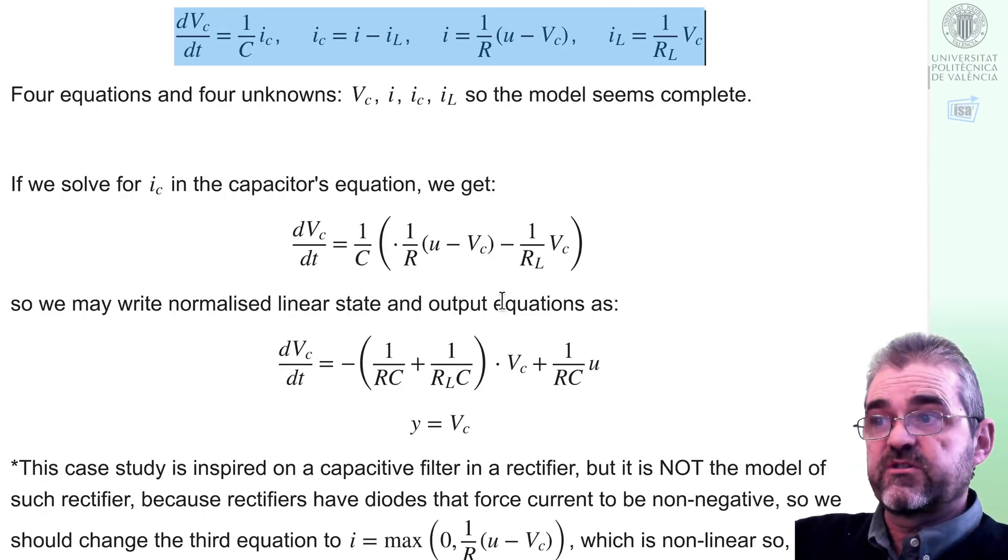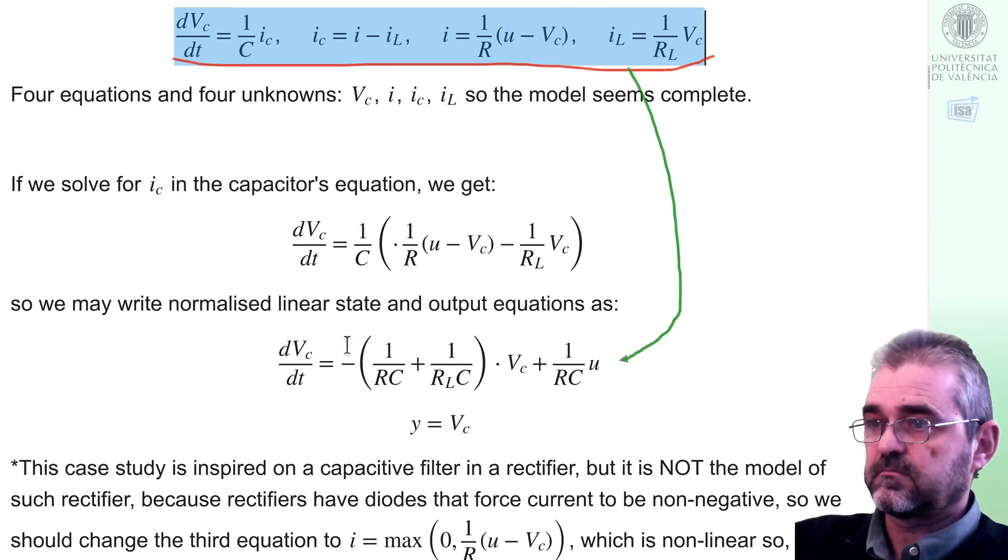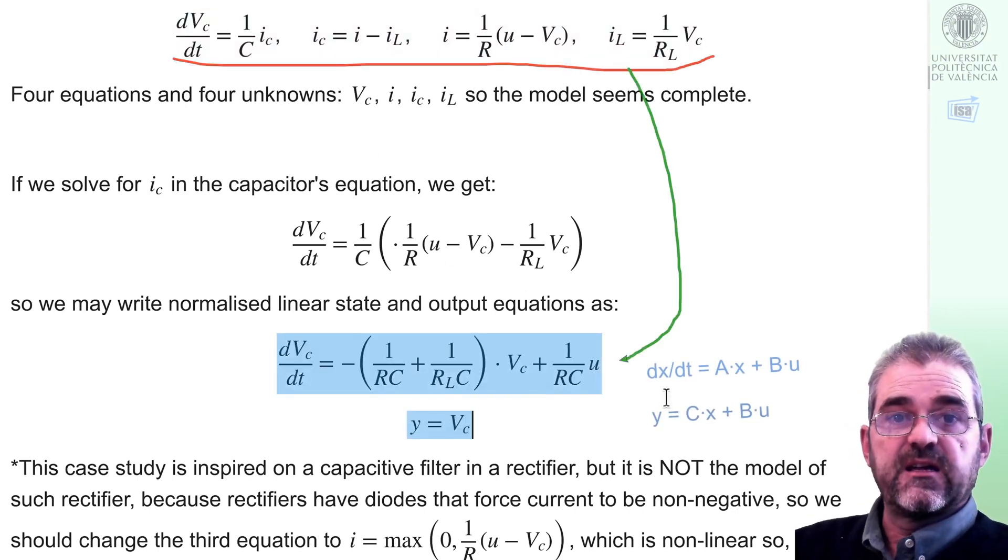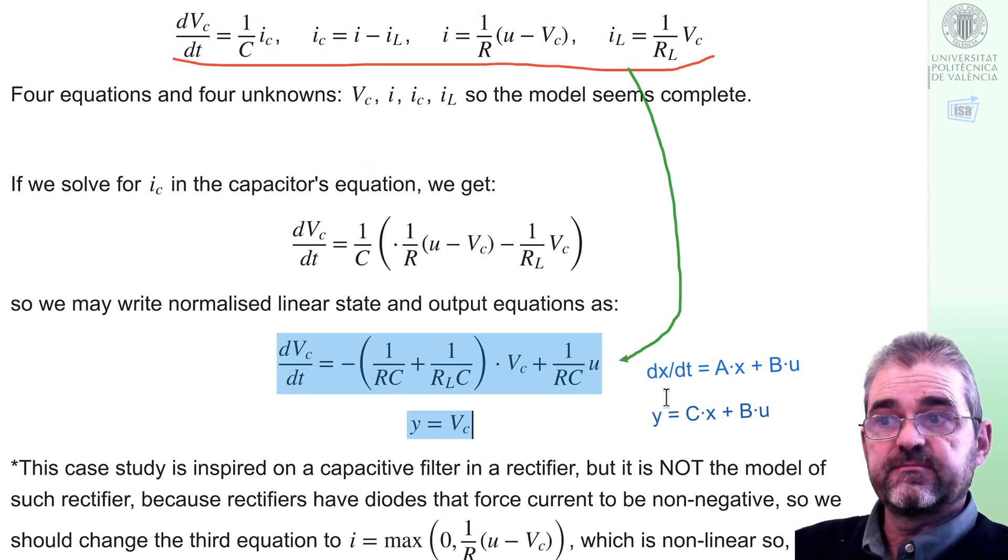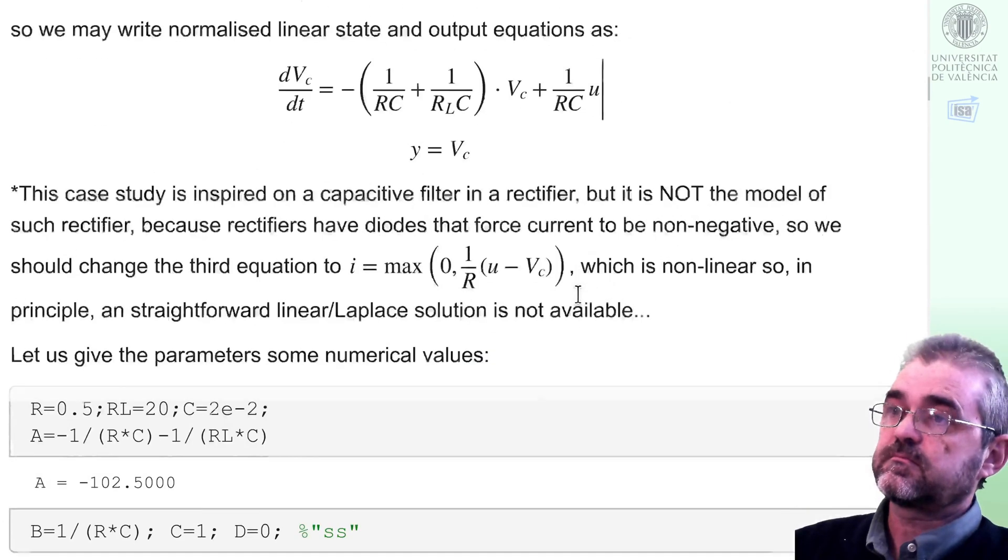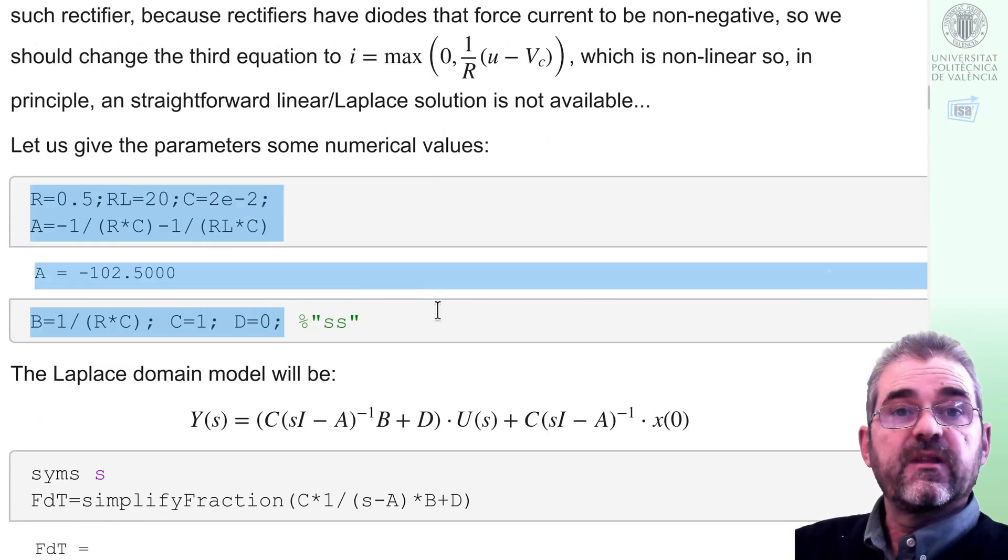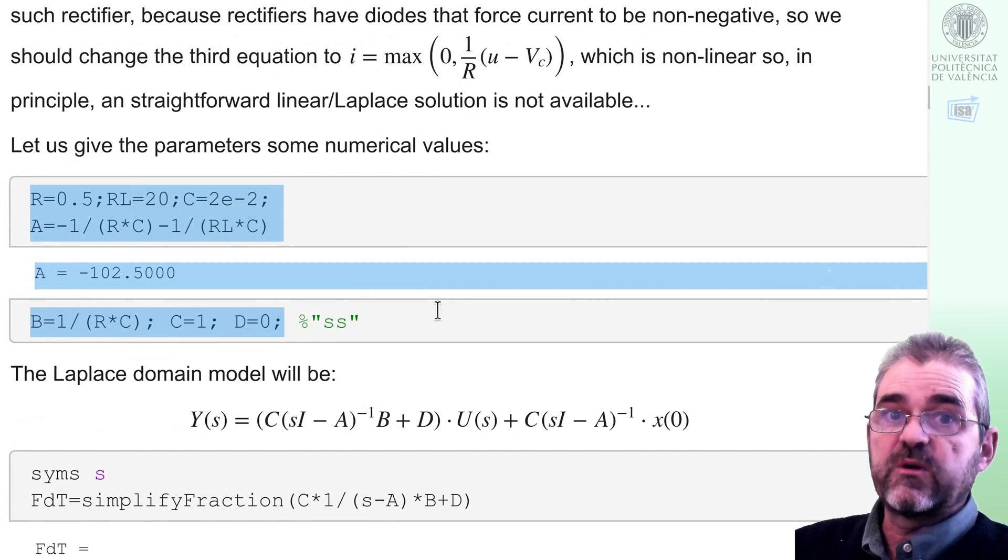And from these equations we can obtain a normalized state space representation, first order. Given numerical values we get matrices A, B, C, D, in this case one by one.